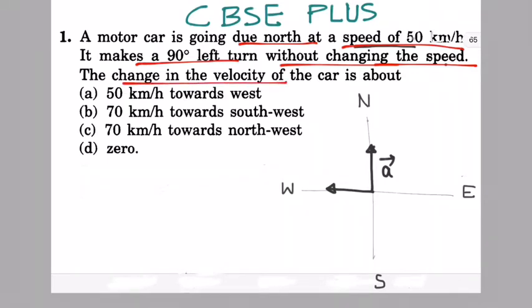Change in velocity is the difference of the final velocity minus initial velocity. Final velocity is given - it makes a 90 degree left turn without changing the speed. So this is our final velocity B and let A be the initial velocity. The values are given: A has magnitude 50 km/h and B has the same magnitude but a different direction.